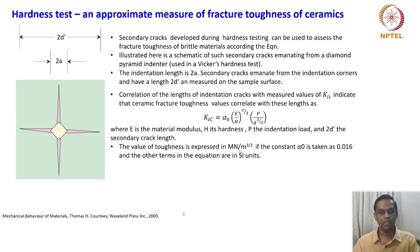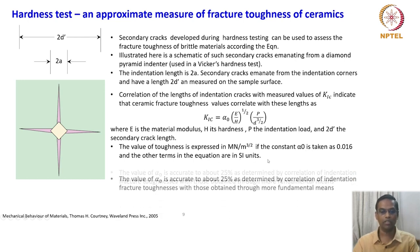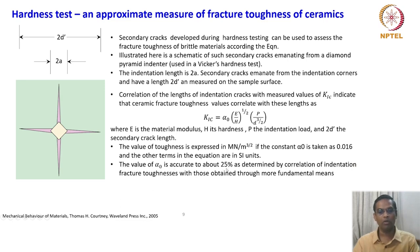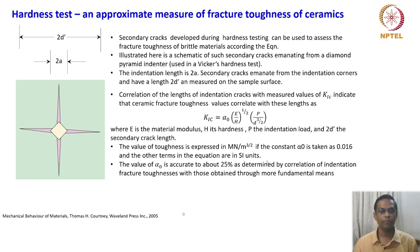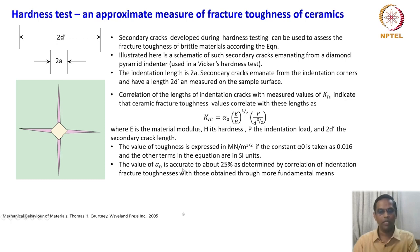The value of toughness is expressed in MN·m^(-3/2) if the constant α₀ is taken as 0.016 and the other terms of the equation are in SI units. The value of α₀ is accurate to about 25 percent, as determined by the correlation of indentation fracture toughnesses with those obtained through more fundamental means. Measuring fracture toughness of ceramics is very important technologically, and measuring it by means of a hardness test is also very handy. Though it gives an approximate value, it nevertheless gives an idea about the fracture toughness—and this is another interesting aspect of measuring hardness in ceramics.